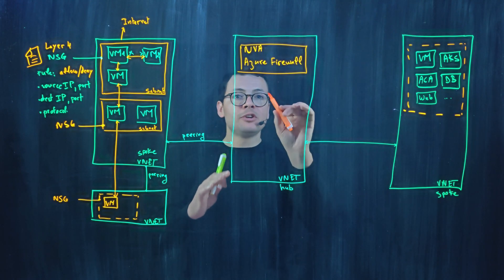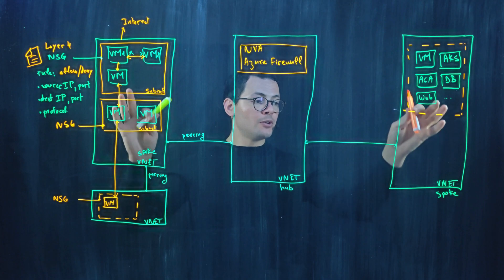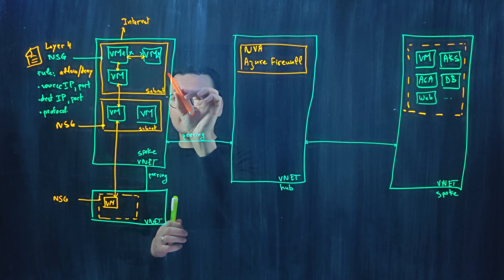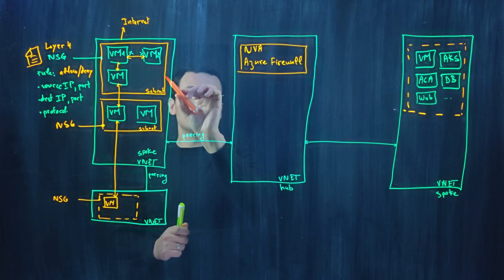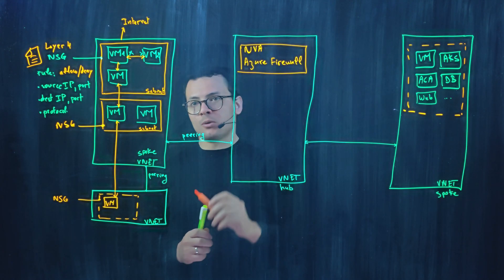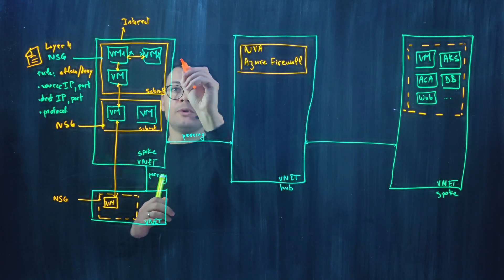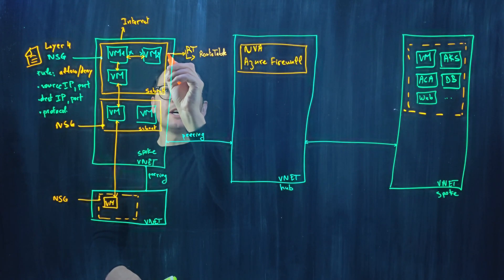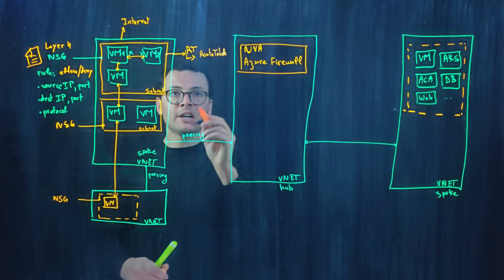Now to be able to filter the traffic of those virtual machines within the different spokes through the Azure firewall, I need to force the egress traffic of those workloads to go through the Azure firewall. And to do that, we'll be using another component in Azure that is called route table. Route table would be attached to a subnet, to each subnet right here.